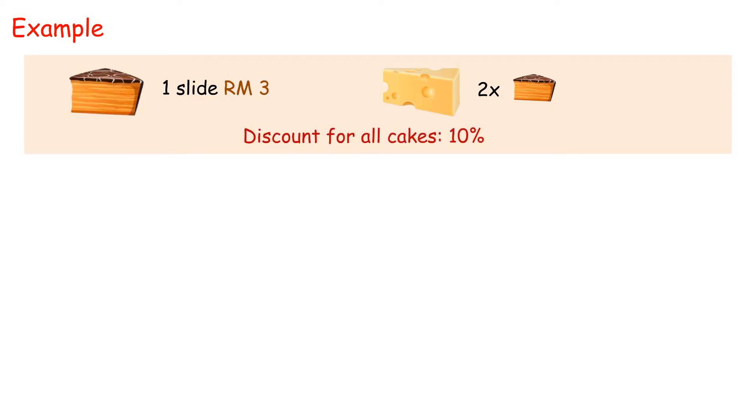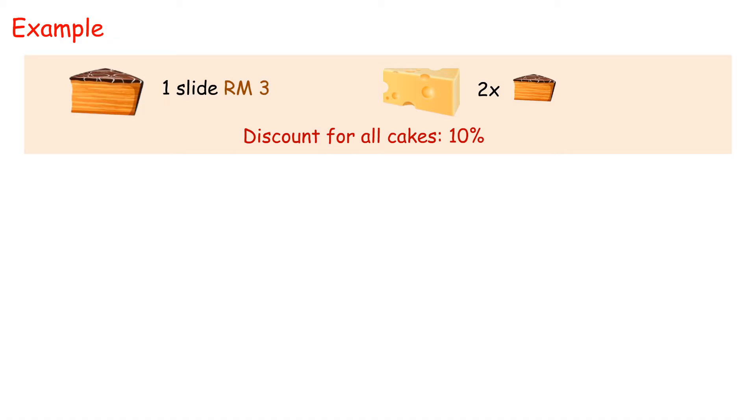Example. Susie sold two types of cakes of different prices. The chocolate cake sold at RM3 a slice. The cheesecake was sold at twice the price of the chocolate cake. In conjunction with the opening of a new branch, she gave 10% discount for all cakes. Determine a formula to calculate the selling price of the cake if m slices of chocolate cake and n slices of cheesecake were sold.